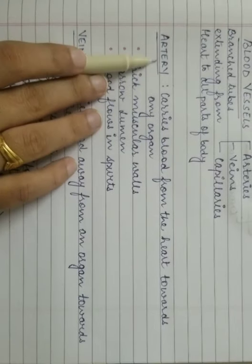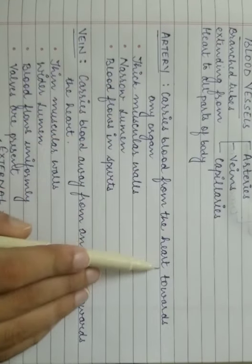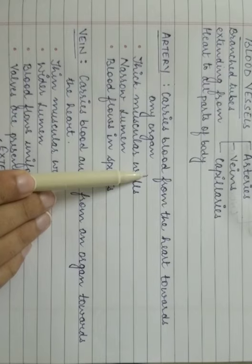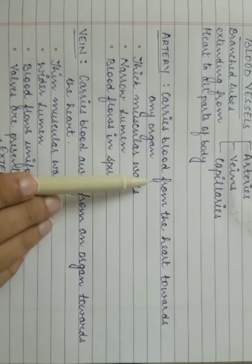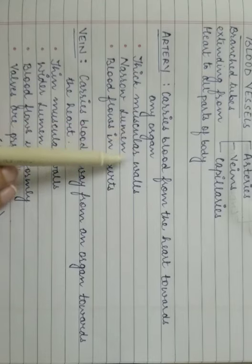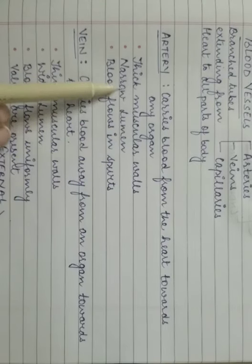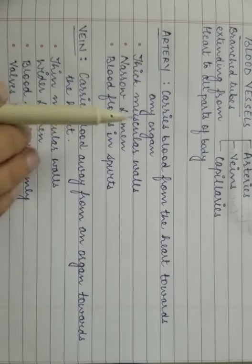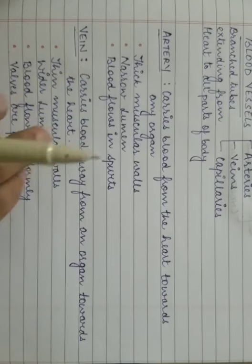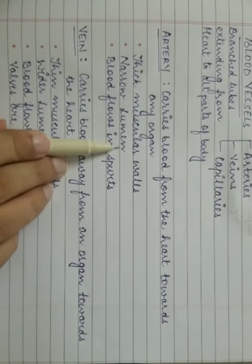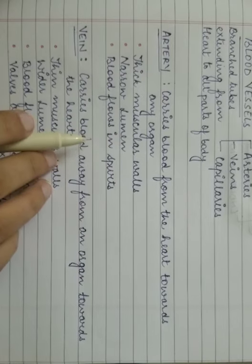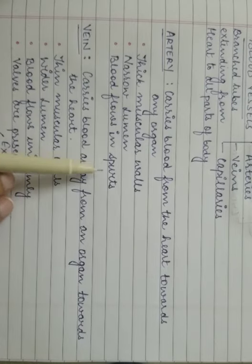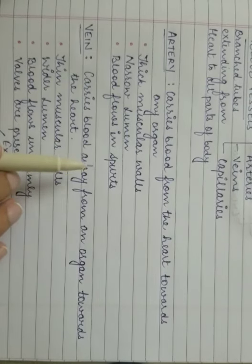Now, what is an artery? An artery carries blood from the heart towards any organ. So an artery carries oxygenated blood — the blood which contains more oxygen. Thick muscular walls are present in the arteries. They have a narrow lumen and blood flows in spurts. The narrow lumen refers to the central bore in the artery. When the ventricles contract, the blood flows in spurts in the arteries.